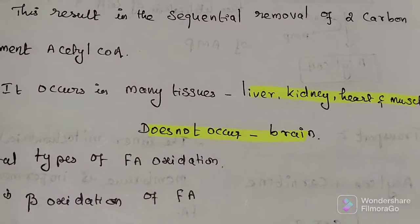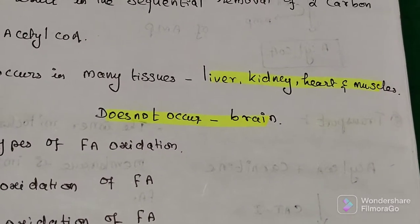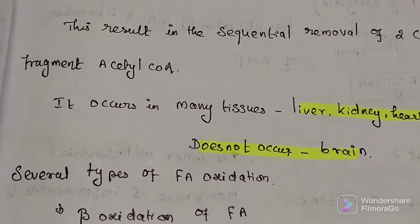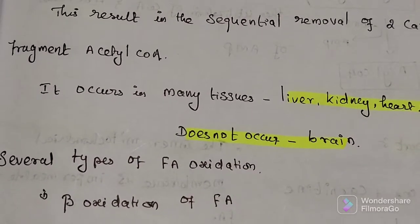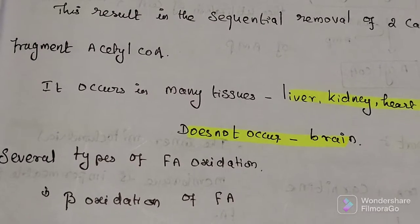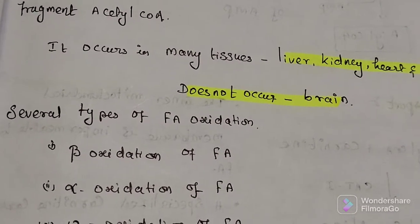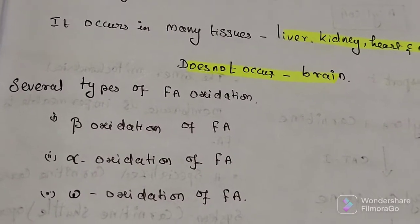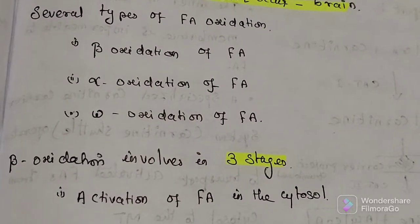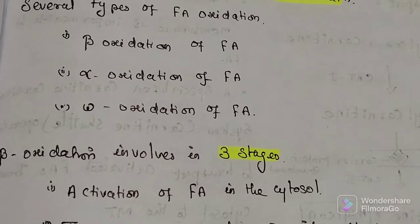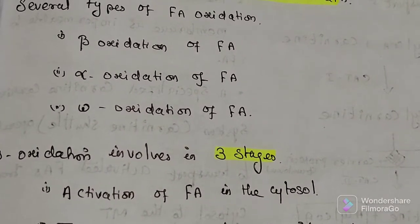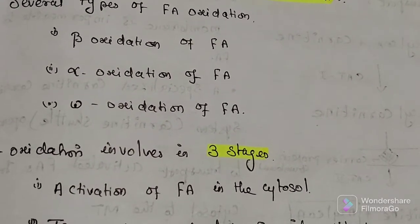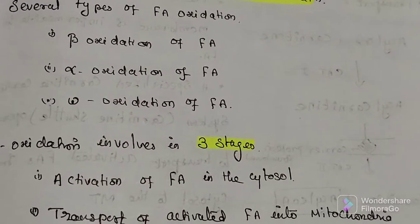Beta oxidation occurs in many tissues like liver, kidney, heart, and muscles. Beta oxidation does not occur in the brain. There are several types of fatty acid oxidation: beta oxidation, alpha oxidation, and omega oxidation. In beta oxidation, successive removal of two-carbon components leads to generation of acetyl-CoA and energy. There are three main steps.